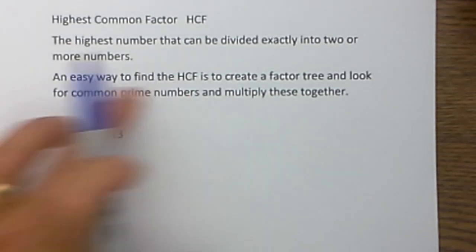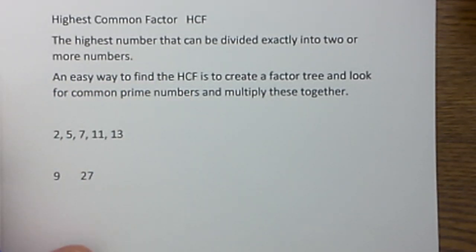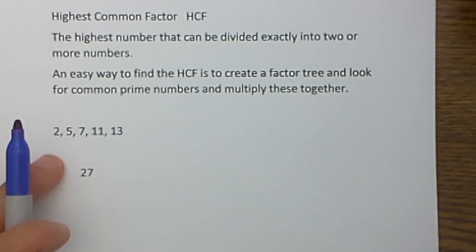An easy way to find the HCF is to create a factor tree and look for common prime numbers and multiply these together. Prime numbers are numbers that are only divisible by itself and one.